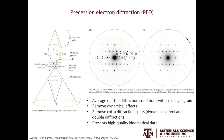Precession electron diffraction, or PED, is a technique available in our lab. During PED, the beam precesses or rocks to form a cone. The main advantage is that it removes dynamical effects and extra spots that are supposed to be forbidden, giving high-quality kinematical data. In the example shown, with a small precession angle you still see some forbidden reflections from the dynamical effect, but with a larger angle those spots disappear.